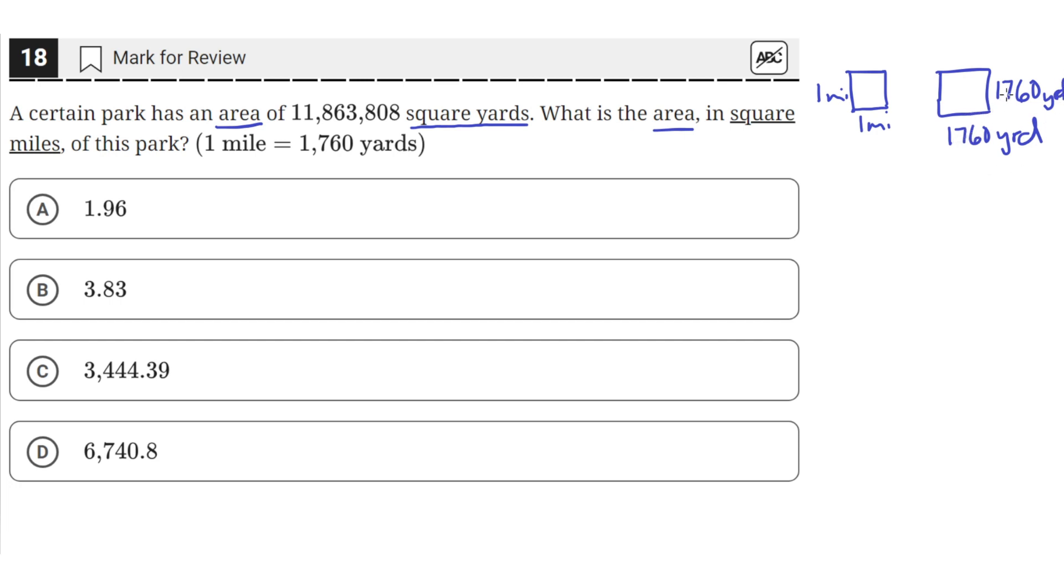So each of the sides is 1,760 yards, and if this is just one square mile, then that means one square mile is equal to 1,760 times 1,760 yards. So if we do 1,760 times 1,760,